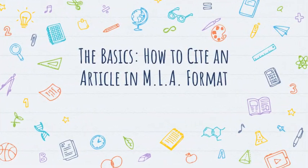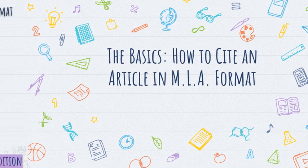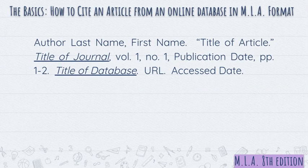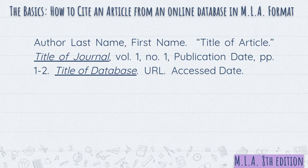Here are the basics on how to cite an article in MLA format. You put the author's last name, comma, their first name, period, a space, the title of the article in quotation marks, a period and then the end quotation, a space, and the title of the journal in italics.